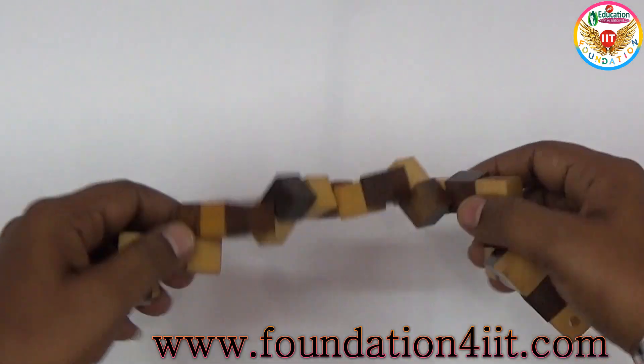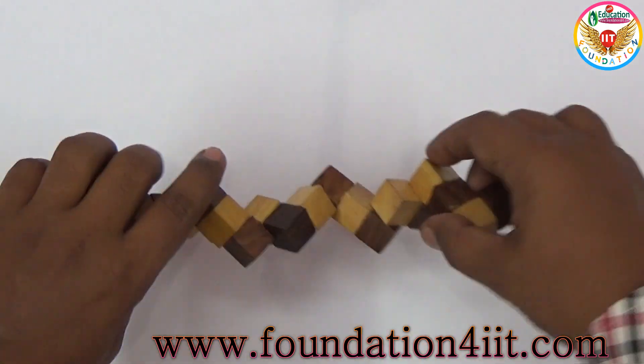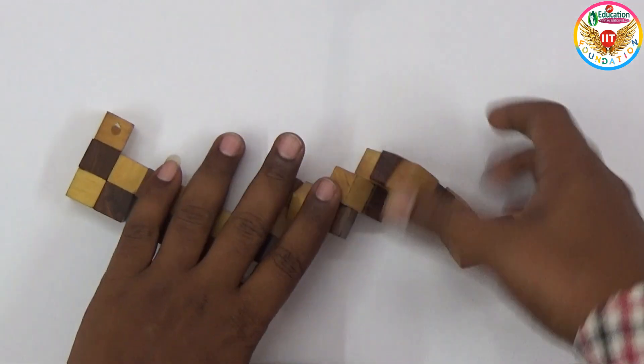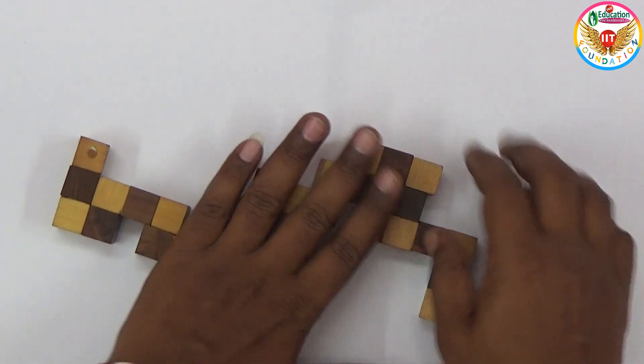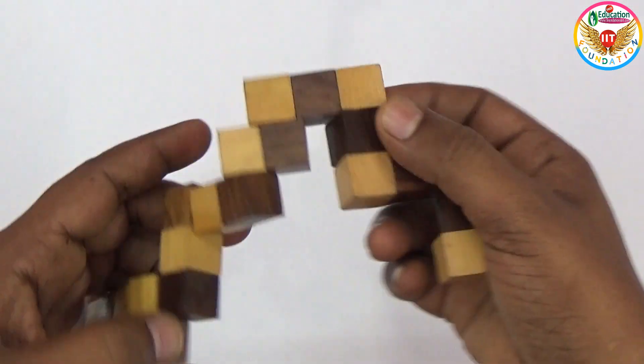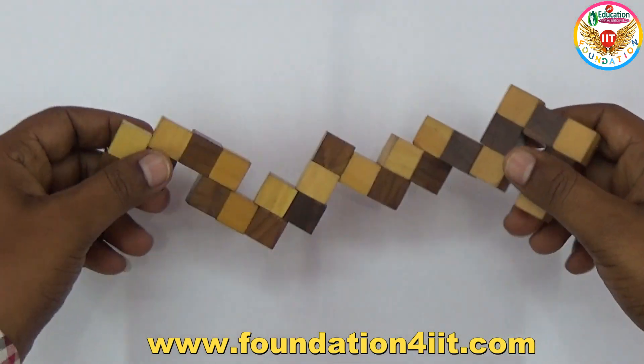Now using this, you should form the cube again. It's not so easy unless you know the logic behind it. Whatever shape it is, this all should be converted back into the cube. Now let's see the solution for this.